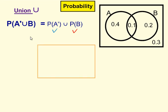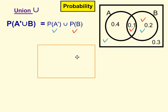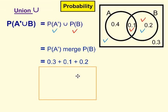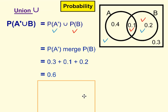Third example: probability of not A union with probability of B. Split it up. Take the first part — that's not A — and we're going to tick everywhere that is not A: that's not A, and that's not A. Union — now we're going to tick everywhere that has B, so this contains B here, and the intersection also contains B. The rule of union is to merge everywhere that we have a tick, so we add up 0.3 plus 0.1 plus 0.2, to give us 0.6.